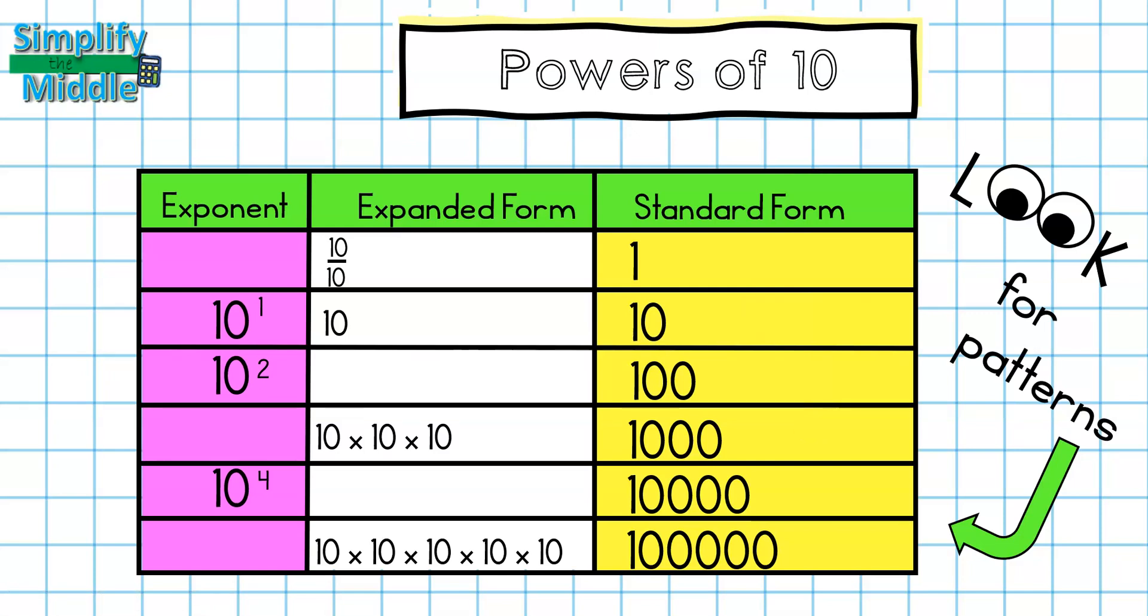Before I can make any more observations, let's go ahead and finish filling out our Powers of 10 chart. Under my expanded form column, I see that I am missing a section here, and a section here.